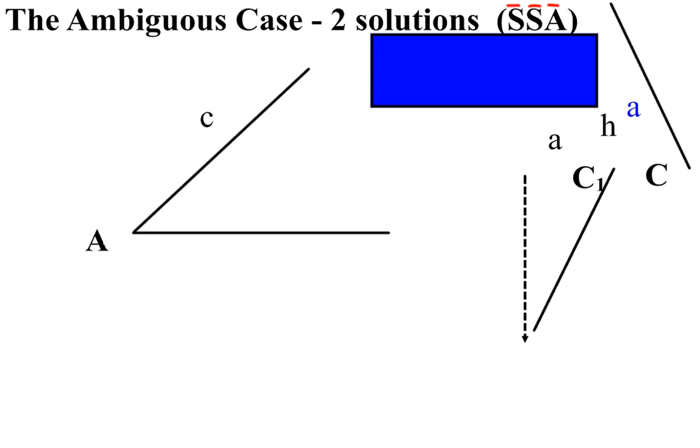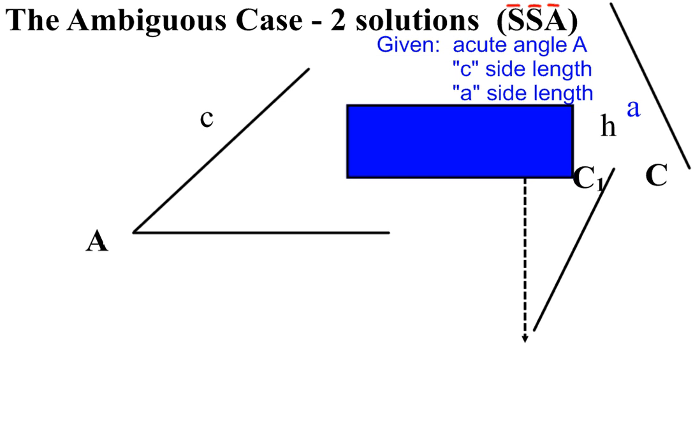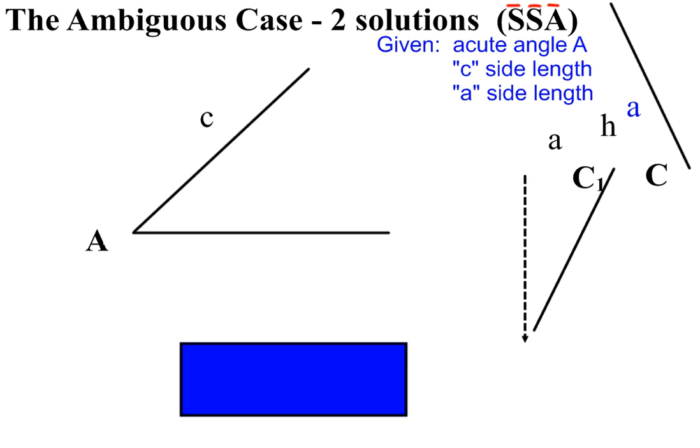To get us prepared for this mini lesson, we pull this slide down for you. We're going to be given acute angle A, the side length that we're going to call C, and another side length that we're going to call A. You can see that what we're actually given is an acute angle measurement and the side length opposite that angle, and then you're also given another side length.